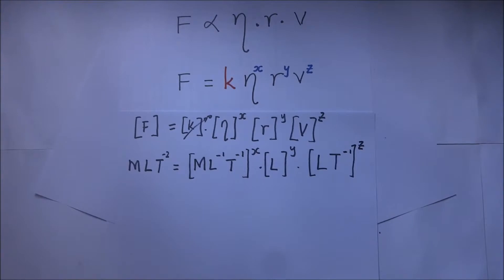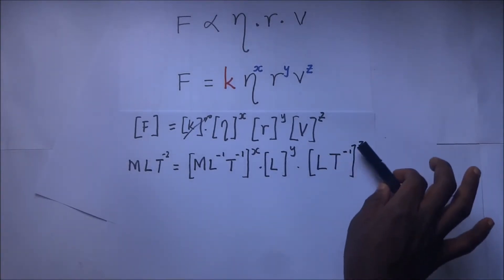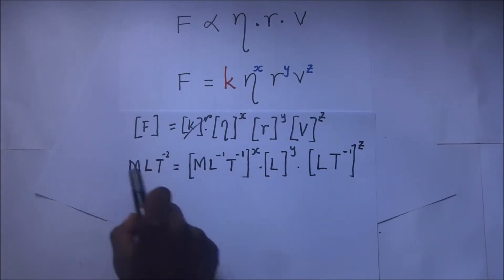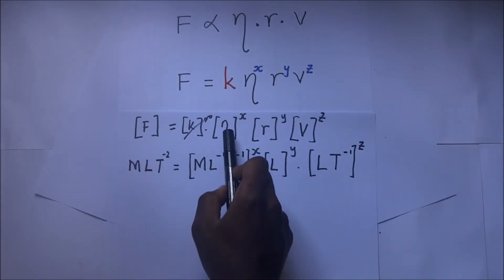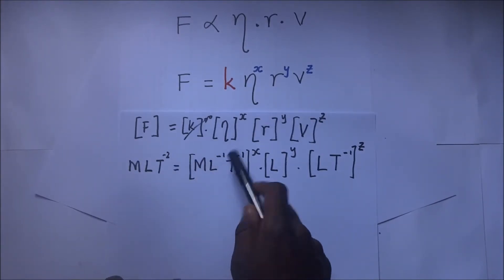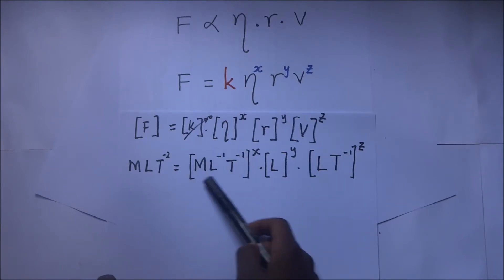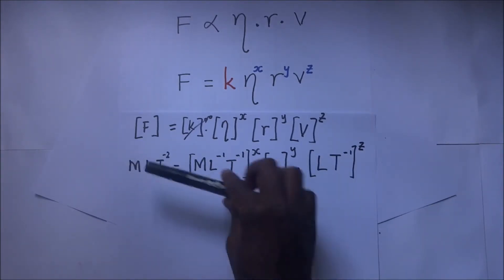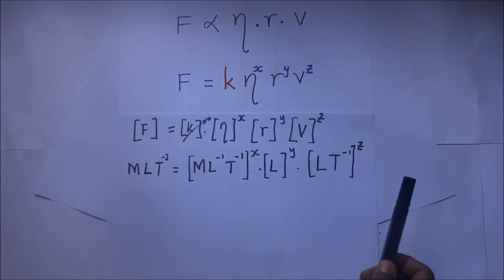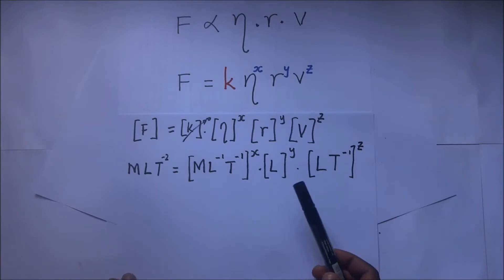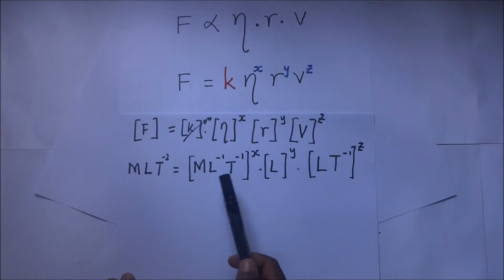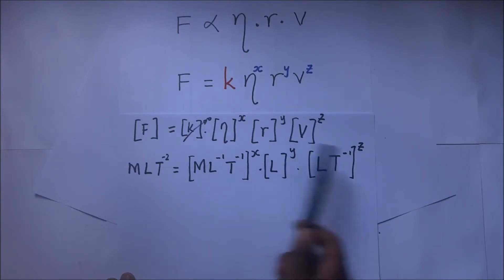I have not gone into the specifics of how we arrive at L·T⁻¹ for velocity or M·L⁻¹·T⁻¹ for the coefficient of viscosity — that was covered in previous sessions, and there is a link in the description below for the video on finding dimensions. Now we need to equate the corresponding indices on both sides of the equation.